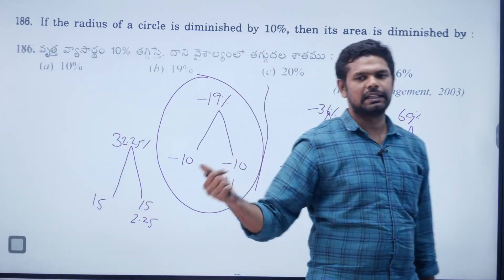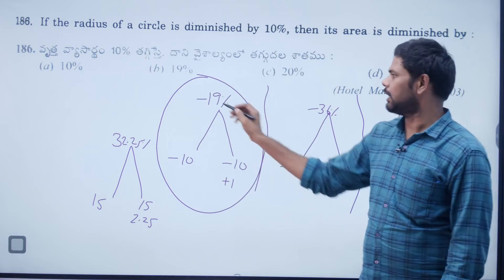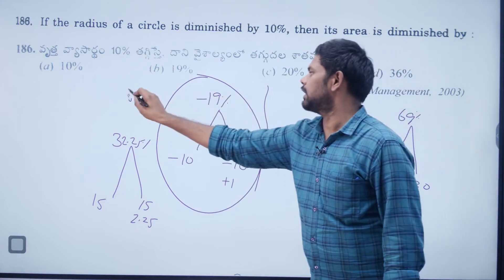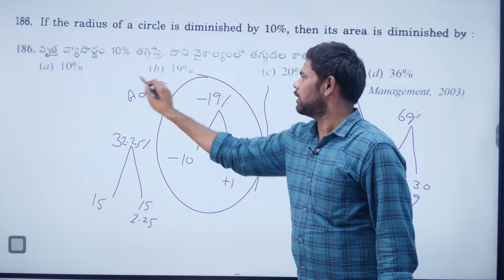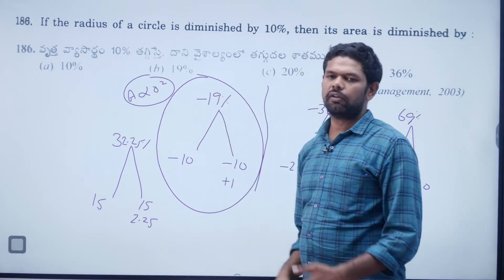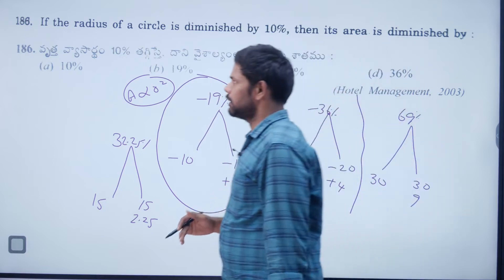Area is directly proportional to r square. So whatever change happens to the square of the radius, the same change happens to the area.